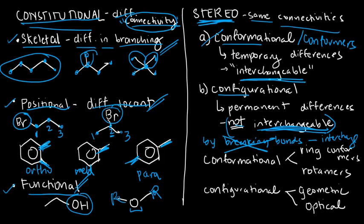The fact that you can interchange one conformer to another means they are temporary differences. Imagine that you are a conformer and your different conformers are you sitting down, standing up, and lying down. The fact that you can just bend your joints, stand up, and go from standing to sitting by mere bending — that's interchangeable. So that's what we mean by temporary.